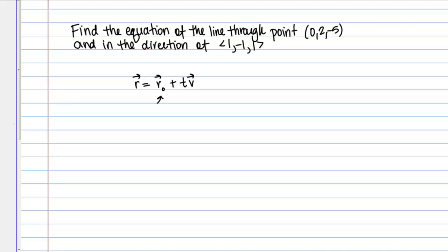Here, vector R₀ corresponds to the position vector pointing to the point you're interested in. Here we want an equation of the line through point (0,2,-5). So vector R₀ is going to be the position vector that goes between the origin and that point. Then vector V is the direction vector of your line.